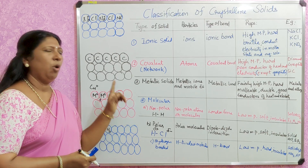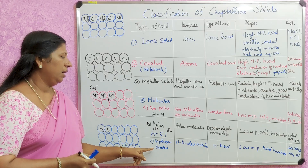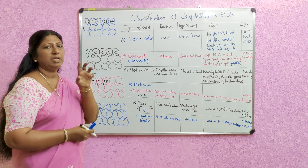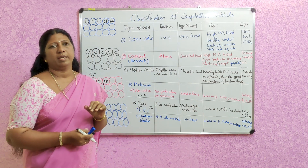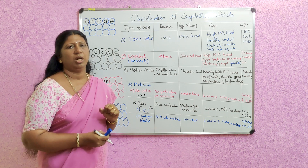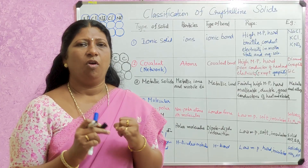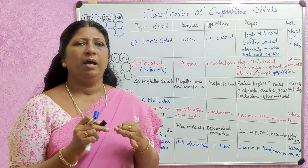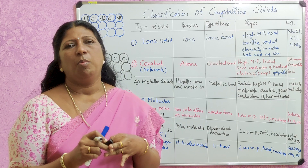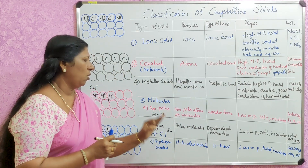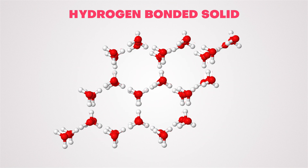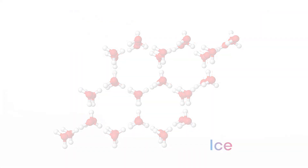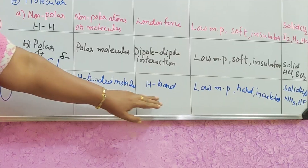The third type of molecular solid is hydrogen bonded solids. Examples in each particle: ice (solid water), solid HF (hydrogen fluoride), and solid ammonia (NH3). These molecules in solid state are held together by hydrogen bonds. Solid water, solid NH3, and solid HF are all examples of hydrogen bonded solids, and the force of attraction is called hydrogen bond.